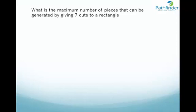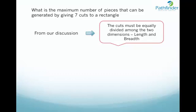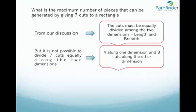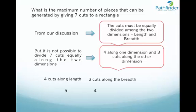Let us solve one more question: what is the maximum number of pieces that can be generated by giving 7 cuts to a rectangle? The cuts must be divided among 2 dimensions equally, but it is not possible to divide 7 equally, so we divide them as 4 cuts along one dimension and 3 cuts along the other. 4 cuts along the length give 5 pieces; 3 cuts along the breadth give 4 pieces. A total of 5 × 4 = 20 pieces — that is the maximum number of pieces by giving 7 cuts to a rectangle.